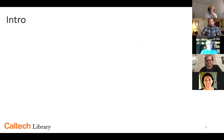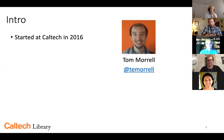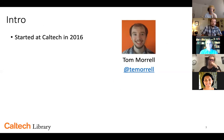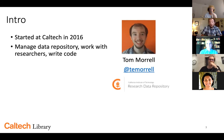A little bit about me — I started at Caltech in 2016. My background is computational chemistry and modeling, but I've been really thrilled working at a library, helping get information, research data, and software out to the world. I manage our data repository, work with researchers around data best practices, and also write code, which is what I'm mostly going to be talking about today.